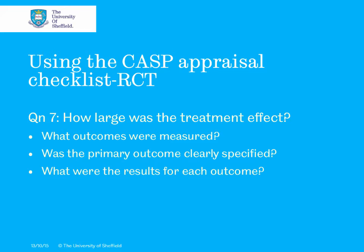It's also important to think about what the results were for each outcome. Is it clear when you read the paper what outcomes they were measuring, and have they provided the results for each of those outcomes?